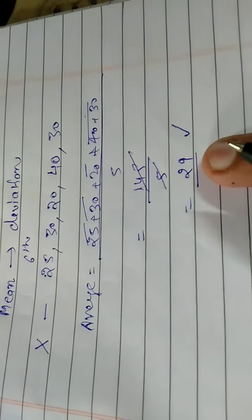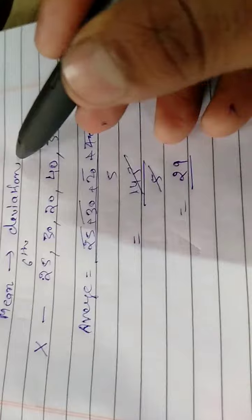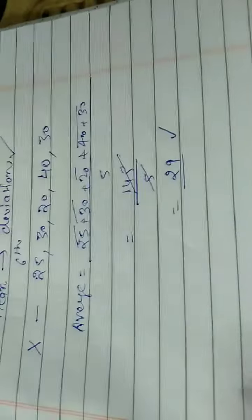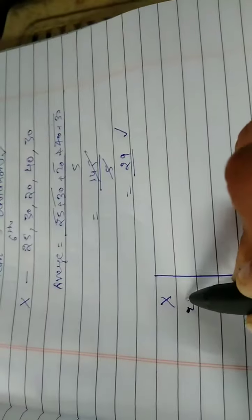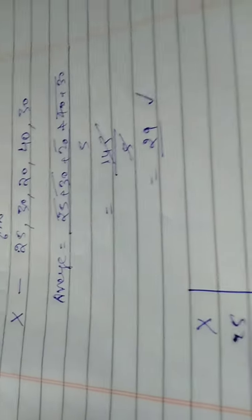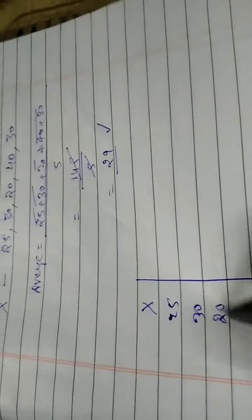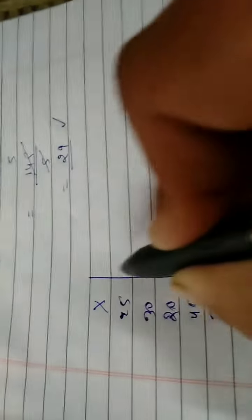But now the question is on the other side. What does it say to you? Deviation. Deviation. This is x. You write this x. How much is x? 25, 30, 20, 40, 30. Clear?